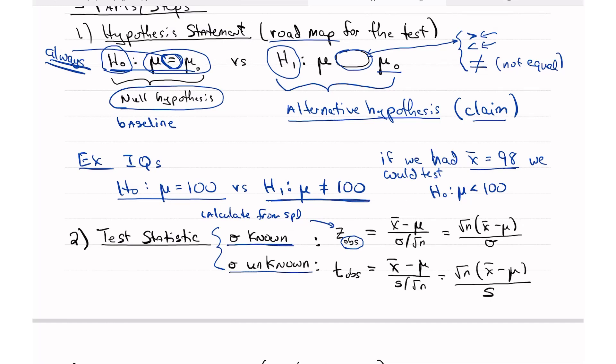And so z observed is x bar minus mu over sigma divided by the square root of n. It can be rewritten using our rules for fractions. Since we're dividing by a fraction, invert and multiply, and we end up with the square root of n times x bar minus mu all over sigma. These are equal. They're the same thing, give you the same answer.